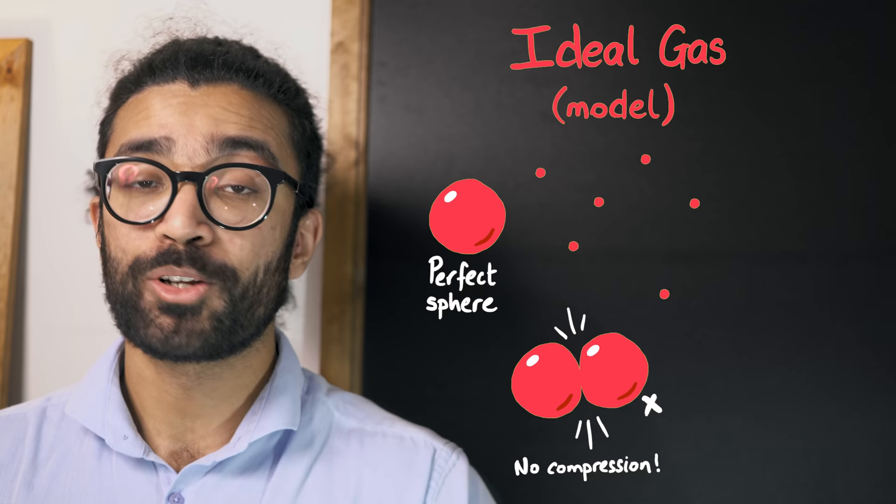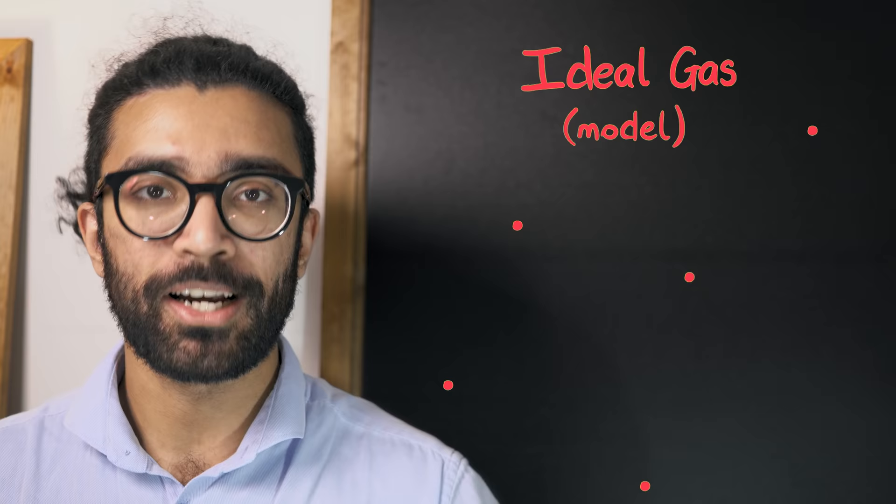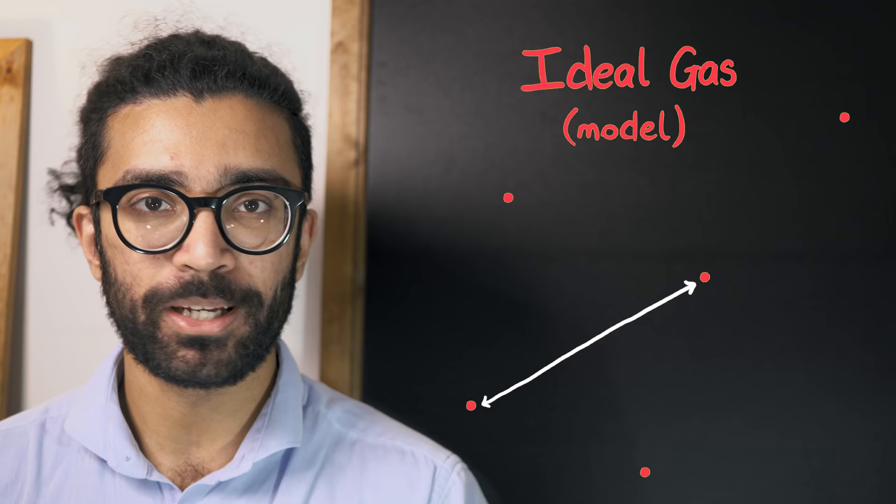Whereas we've seen that for a real gas, those assumptions don't necessarily hold true. Another assumption made by the ideal gas model is that the particles are so spread out that the average distance between particles is much much bigger than the size of a particular particle itself.